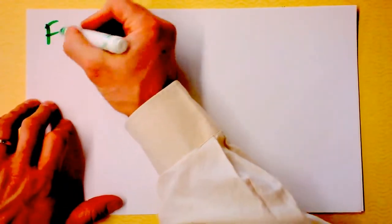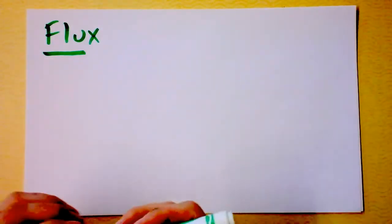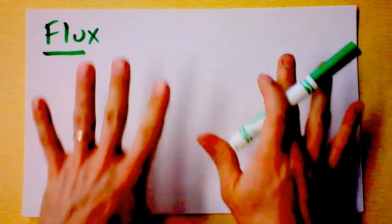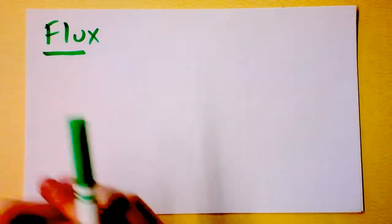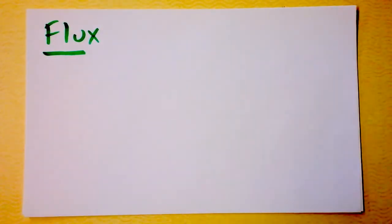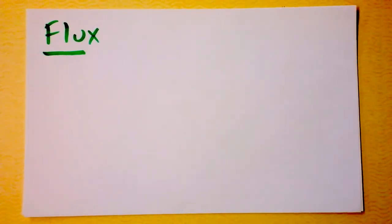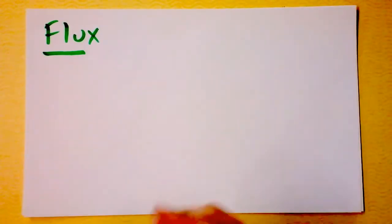The word flux comes from the Latin fluxus, meaning flow. We're going to talk about the idea of electric flux. It does not mean electrons moving from one place to another, but it represents the idea of electric field going through an area — so it's a flowing of electric field more than it is a flowing of electric charge.